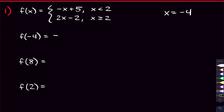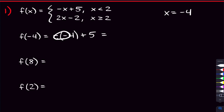We know we're gonna be plugging into the negative x plus five function. So we write negative x plus five and plug in negative four for x — so it becomes negative negative four plus five. Make sure you realize there are two negatives here: one from the negative on the x, and one from the negative on the four. Since there are two negatives right next to each other, they both become positive, giving you four plus five, which is nine.